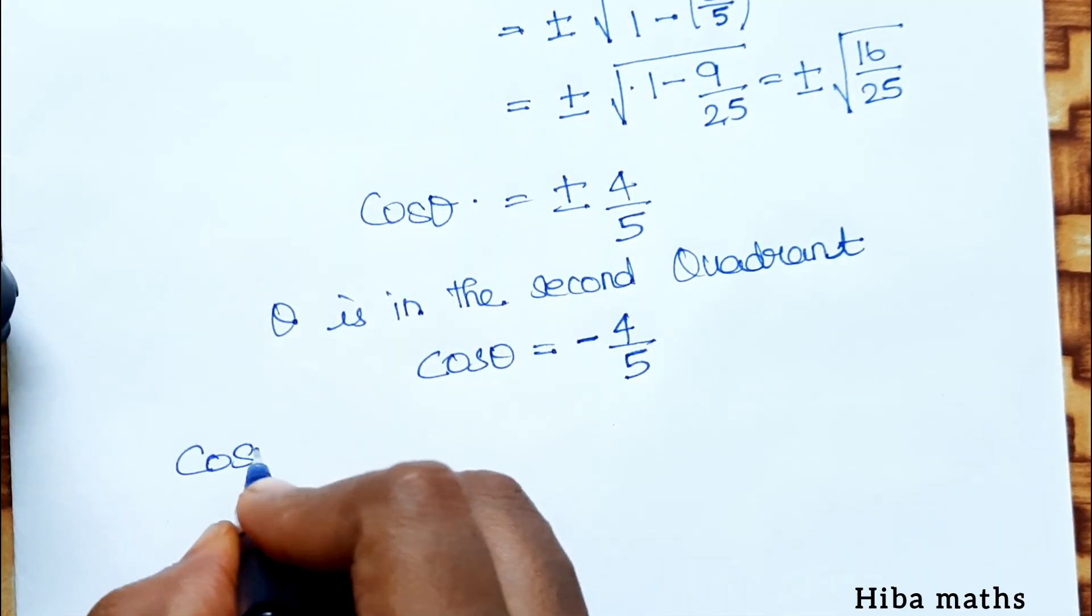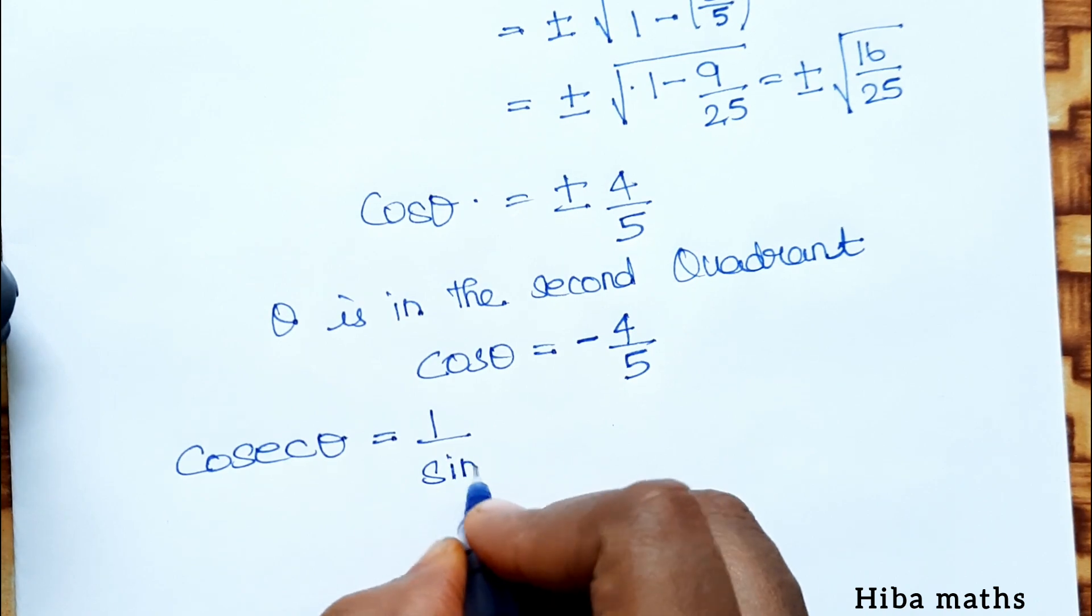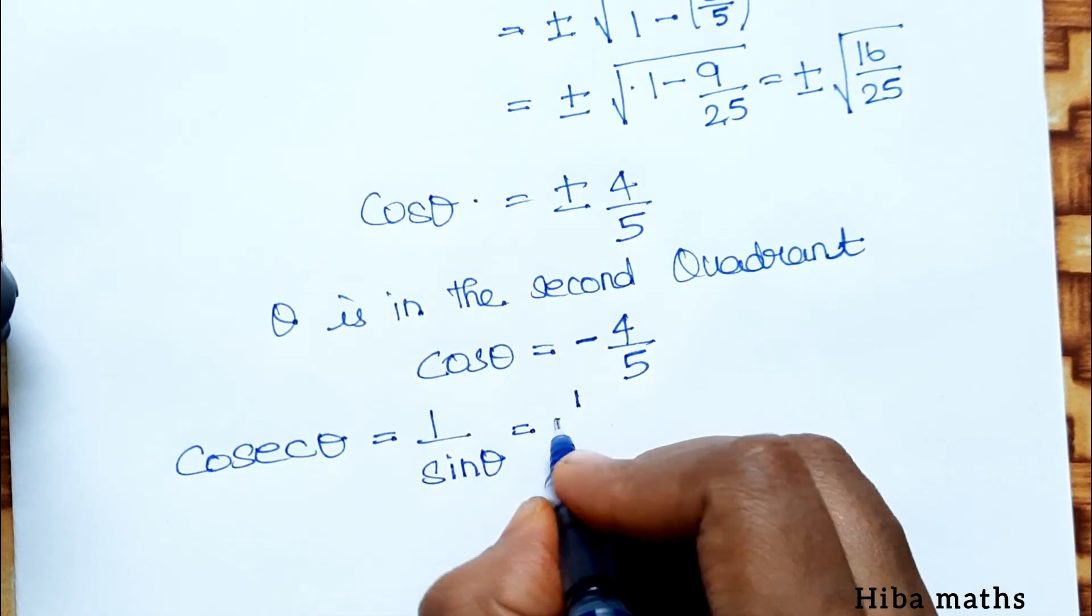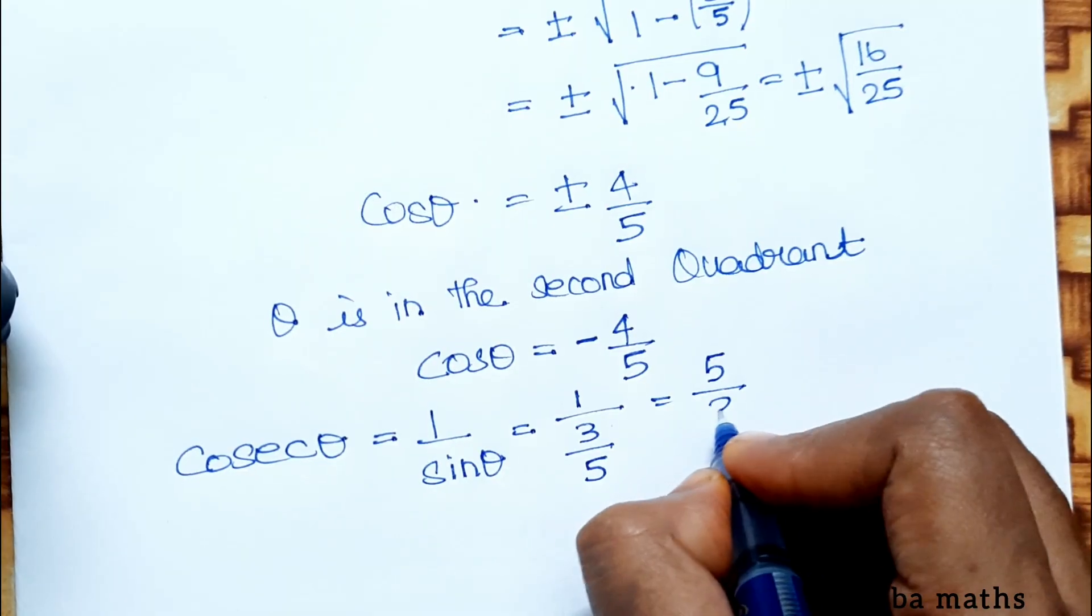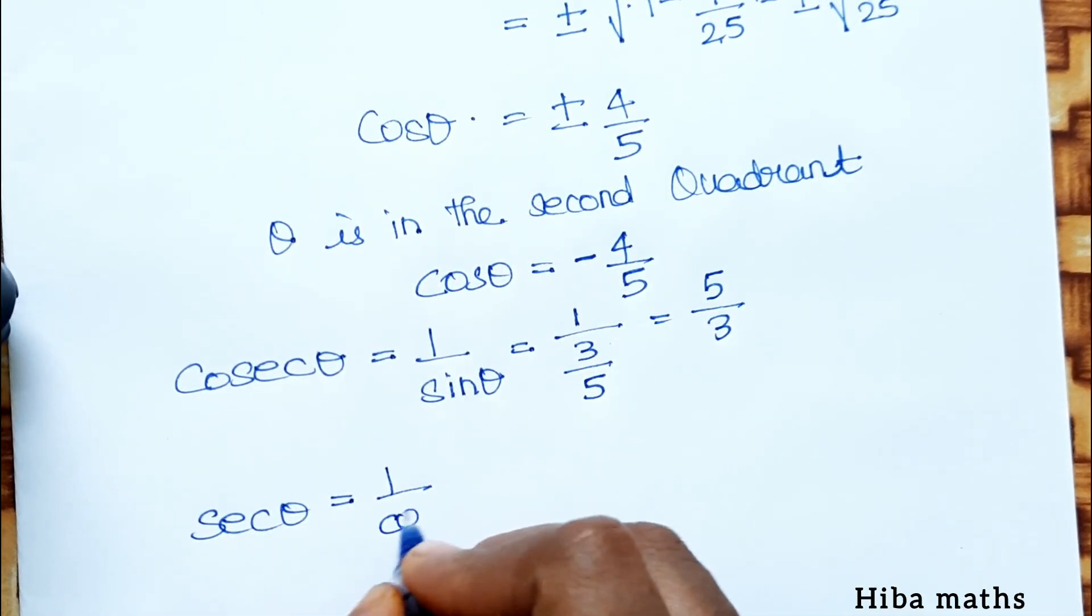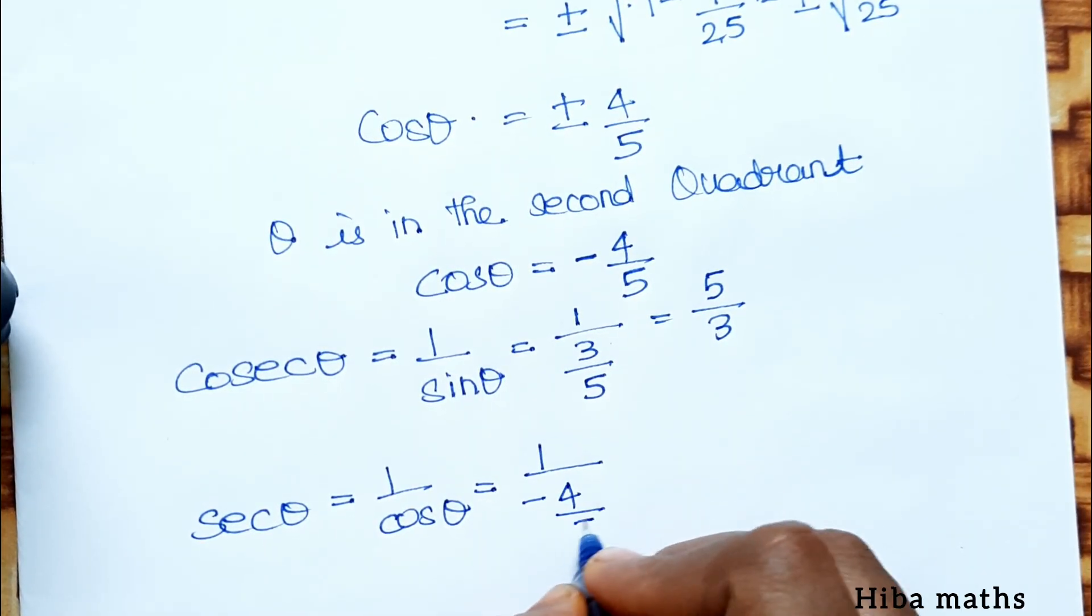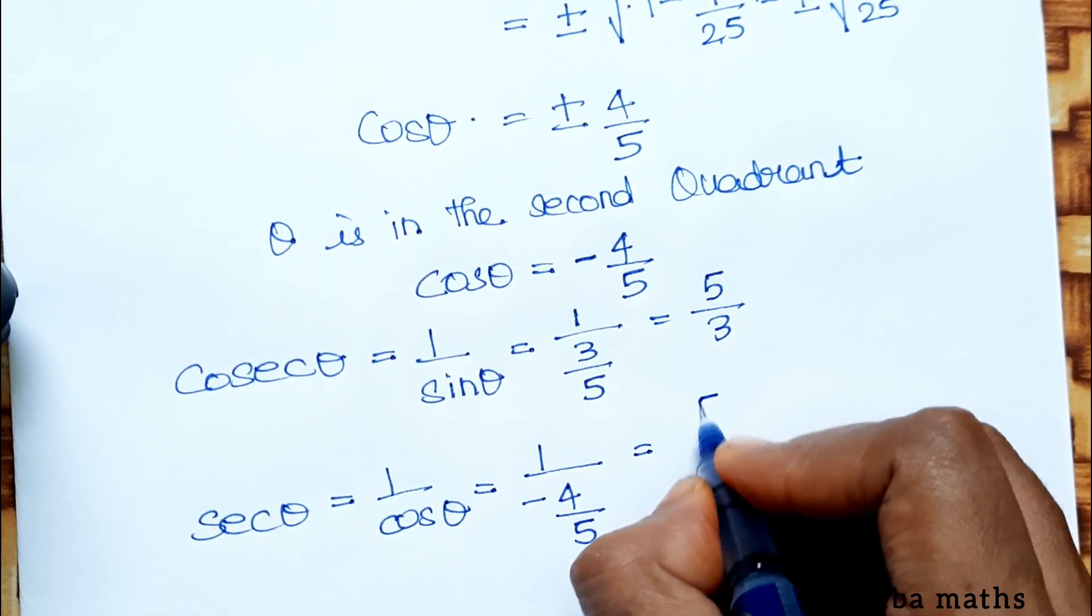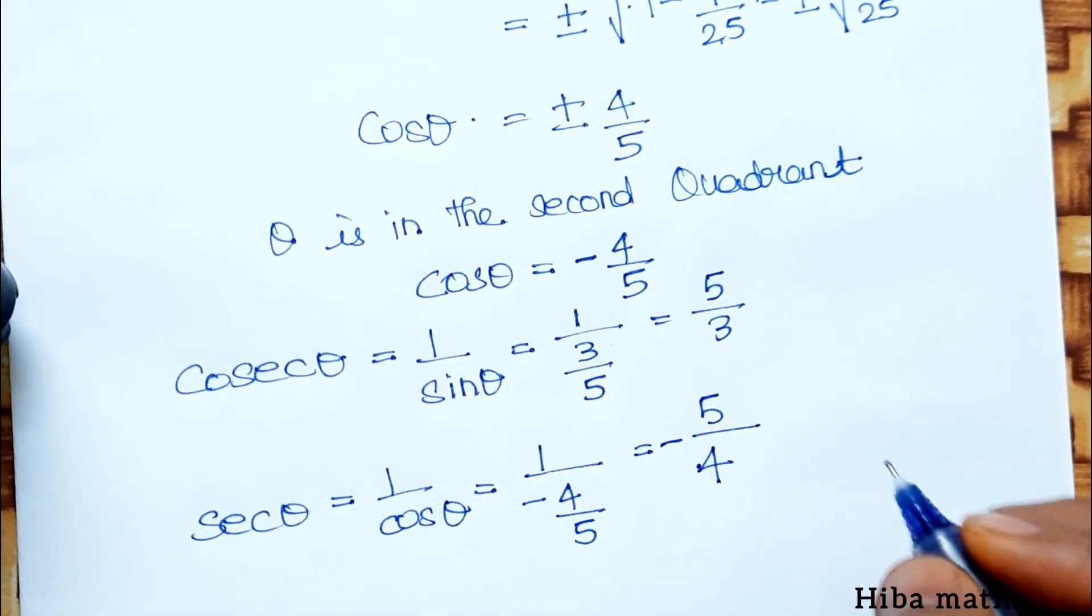Cosec θ equals 1 by sin θ. Now, 1 by 3 by 5, taking reciprocal, is 5 by 3. Sec θ equals 1 by cos θ, so 1 by minus 4 by 5, which equals minus 5 by 4.